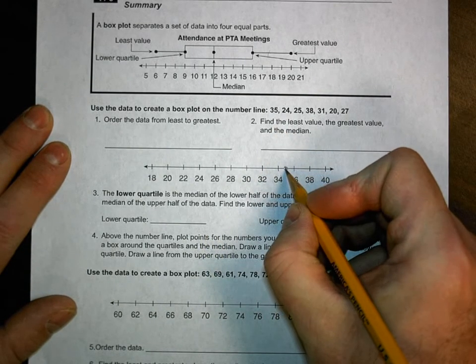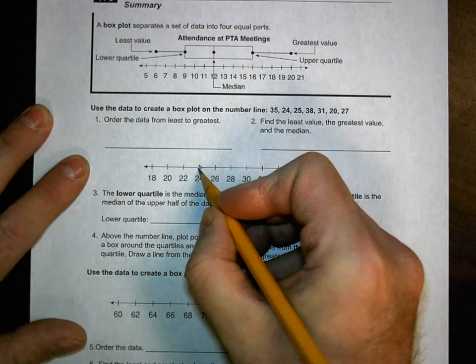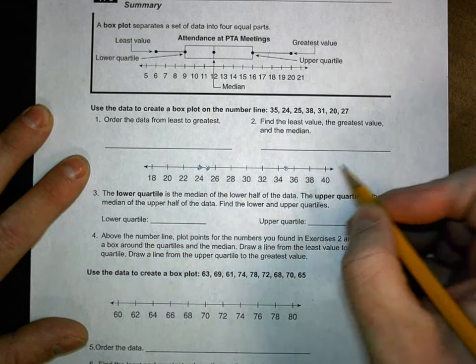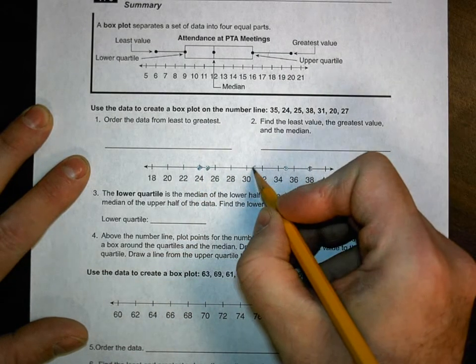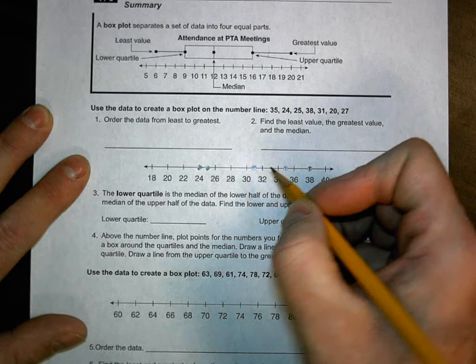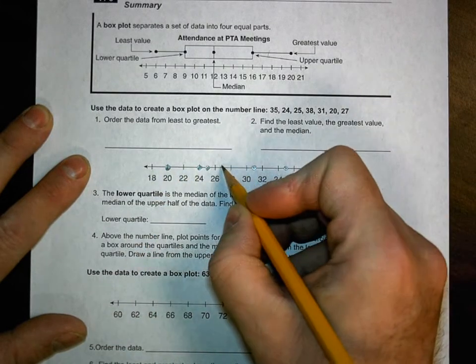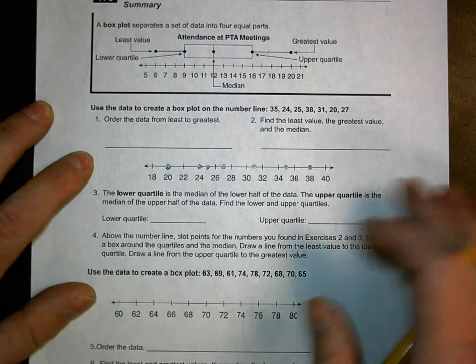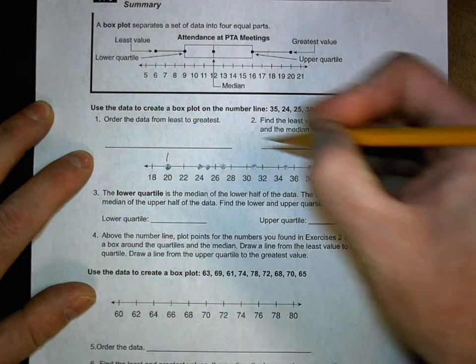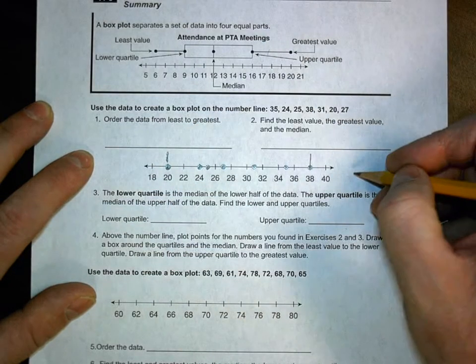So I'm going to plot my dots on the number line. So 35, that's between 34 and 36, 24, 25, 38, 31, I almost put it in the wrong spot, 20, and 27. So now I've plotted all my dots. I now have everything I need to know because I know that here is the total range. The spread is from 20 to 38.